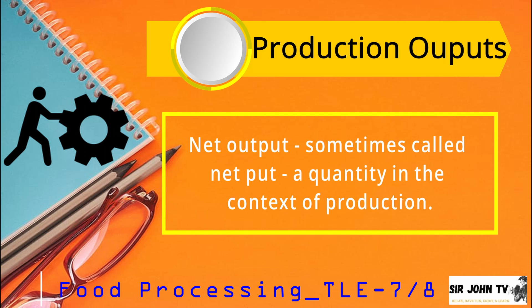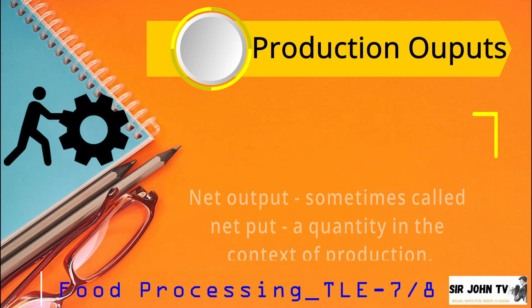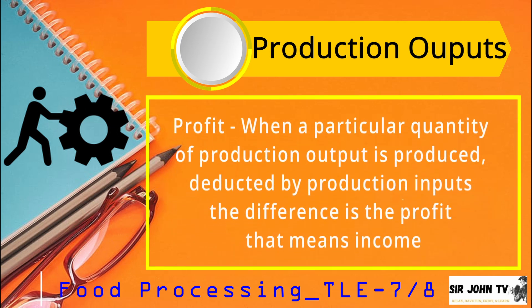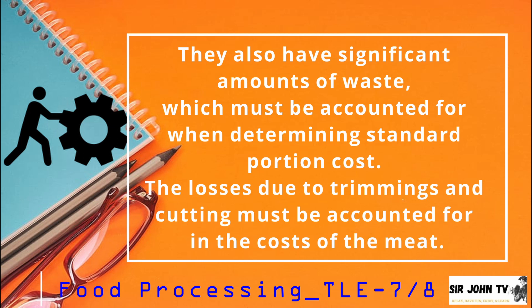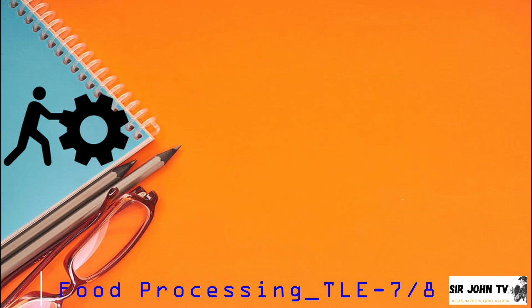Net output, sometimes called net put, is a quantity in the context of production. Profit is when a particular quantity of production output is produced and deducted by production inputs — the difference is the profit, which means income. Meat and seafood products tend to be the most expensive part of the menu.